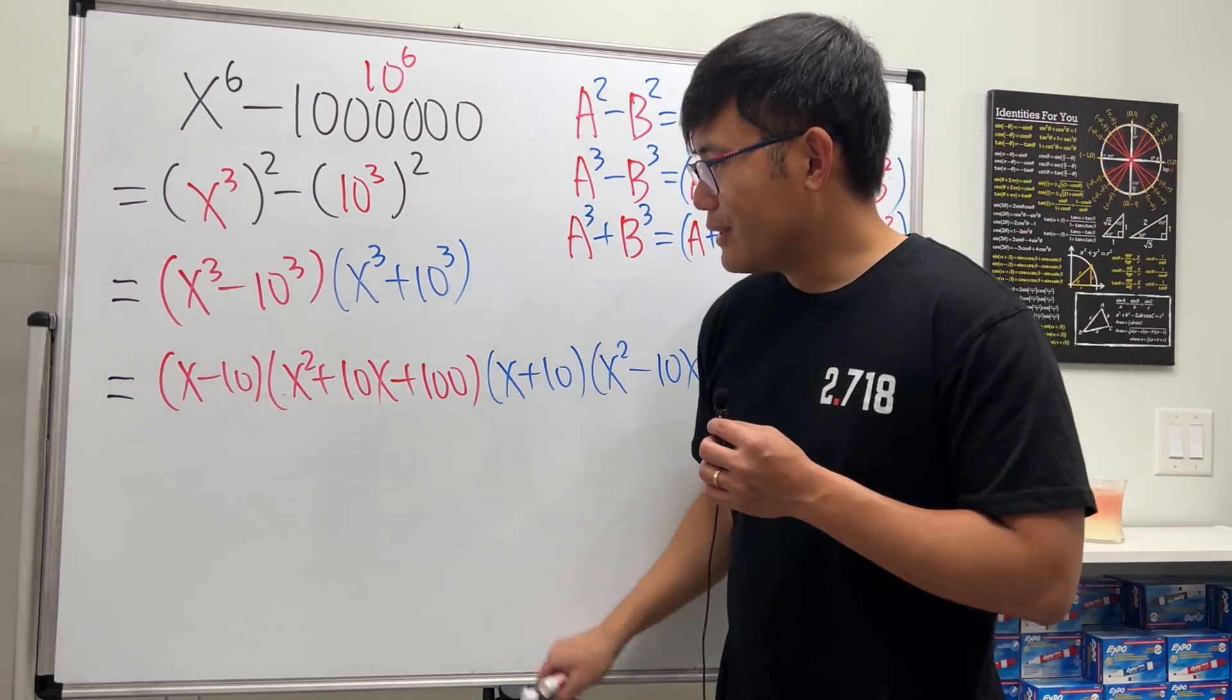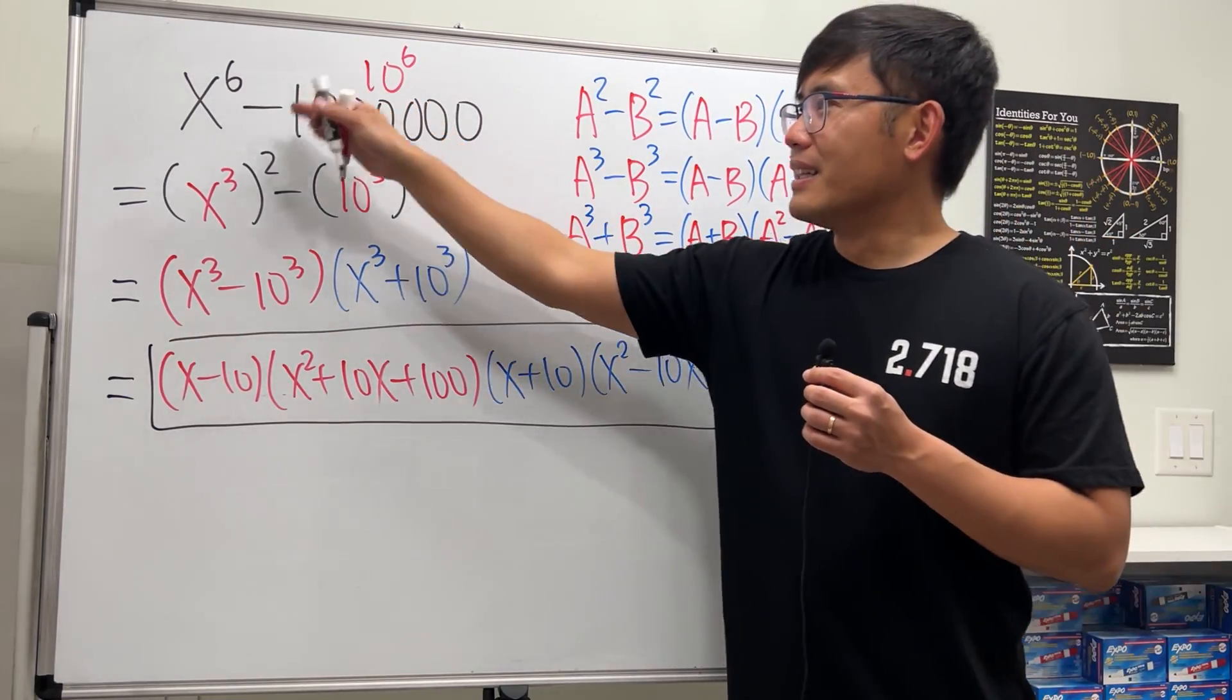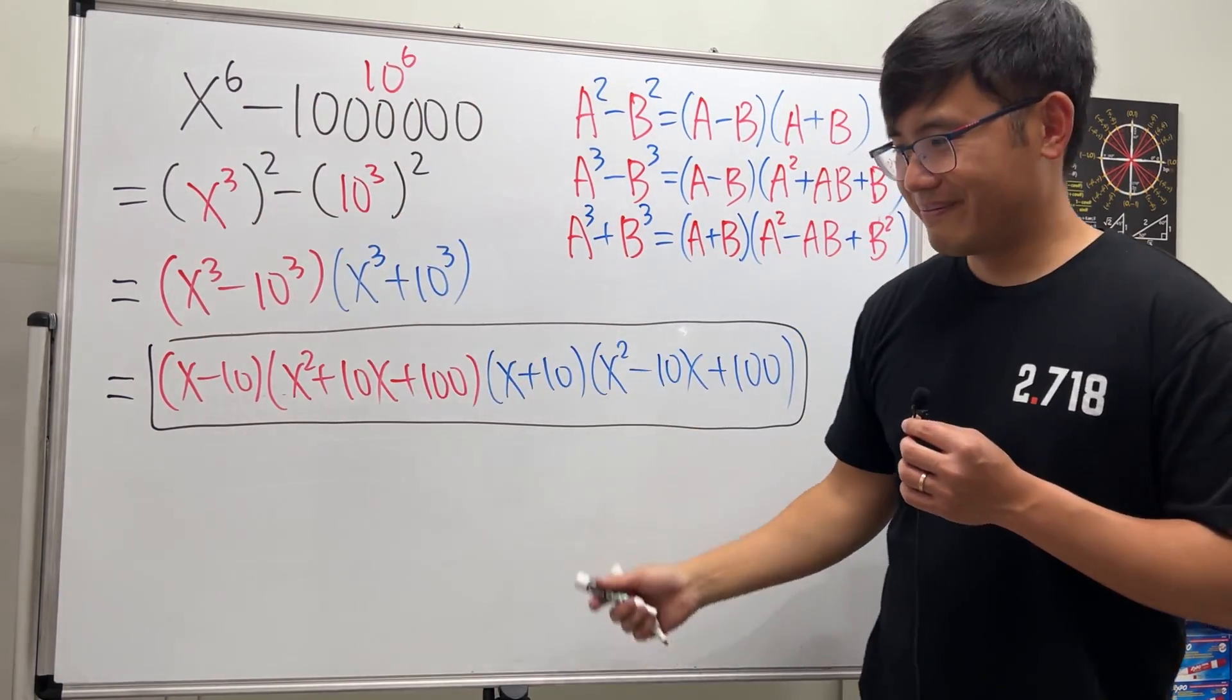Yeah. So, this right here is it. That's how you factor a difference of two 6th powers. Pretty cool, huh?